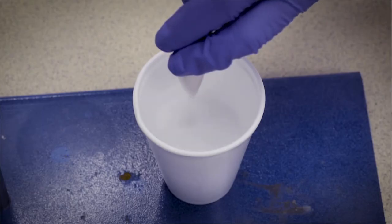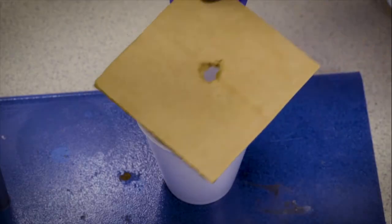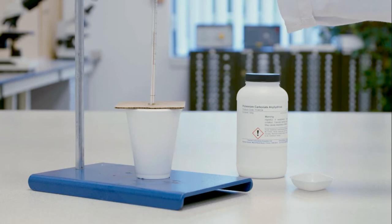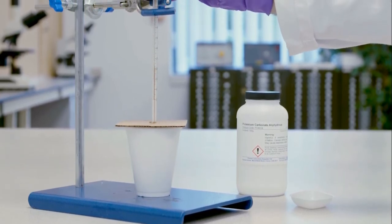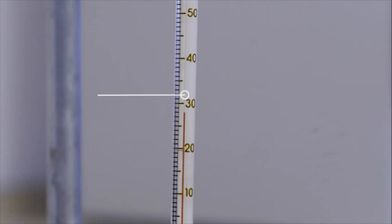The solid is added carefully to the calorimeter. Effervescence is observed and the lid fixed on. The thermometer is carefully guided through the calorimeter lid. The temperature of the reaction mixture increases and the temperature at the highest point is recorded.